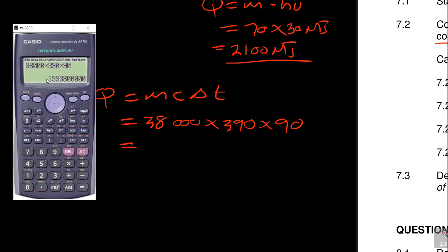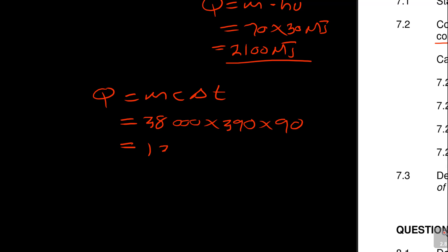The result is too big because we're dealing in megajoules — we must divide by 1 million. That gives us 1,333.8 megajoules. So Q for copper is 1,333.8 MJ.